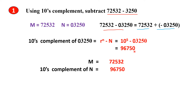This is the 10's complement. When you add both numbers, you get this as the answer. That is: 2 plus 0 is 2; 2 plus 0 is 2; 3 plus 5 is 8; 5 plus 7 is 12 — so you put 2 here and carry 1.